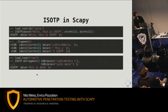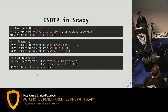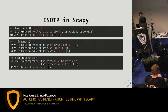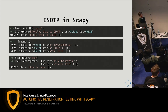To use ISO-TP in Scapy: first, load the ISO-TP layer, then create ISO-TP messages as objects. You can use the fragment method which returns all the smaller CAN frames the message will be split into — for example, the first frame followed by consecutive frames. You can also do the opposite: if you have CAN frames, you can defragment them, and the fragmented message is built back into an ISO-TP message.